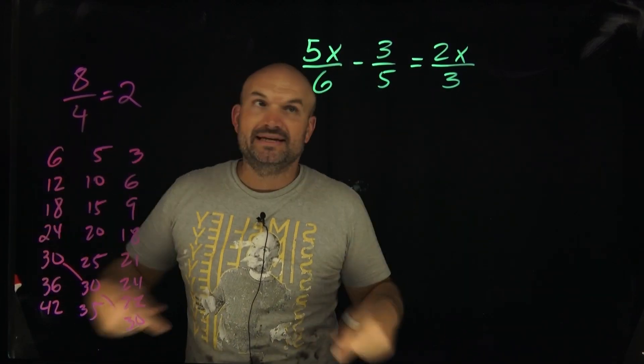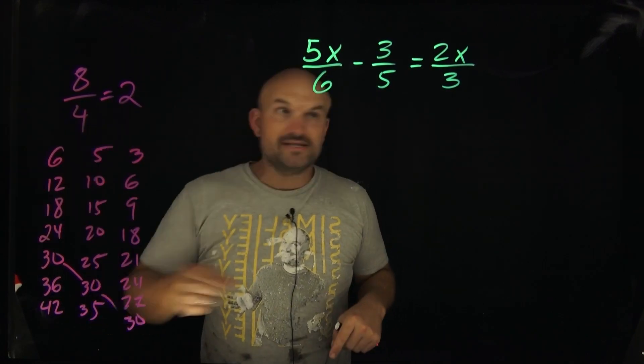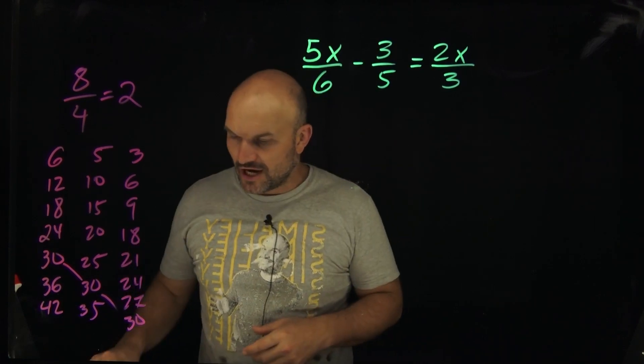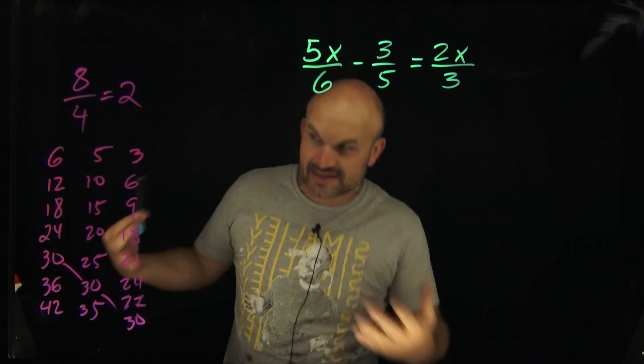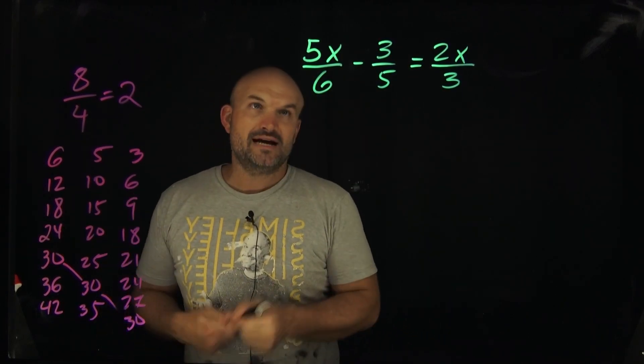And remember, if it's a multiple, what that means is these numbers, like six divides into all these numbers, five divides in all these numbers, three divides in all those numbers, right? Those are the multiples of our number. So 30 is the smallest common multiple, LCM of them. Well, when we're dealing with denominators, then we just call it our least common denominator.